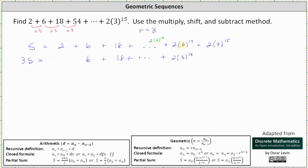And then we have 3 times 2 times 3 the 14th, which gives us plus 2 times 3 to the 15th. And then the last product is 3 times 2 times 3 the 15th, which is 2 times 3 to the 16th.